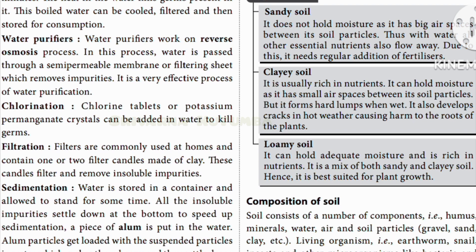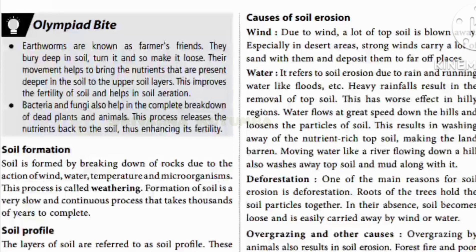The composition of soil consists of a number of components: humus, minerals, air, water, and soil particles like gravel, sand, and clay. Living organisms such as worms, snails, insects, and microorganisms like bacteria are also present in the soil. Earthworms are known as the farmer's friend. They are buried deep in the soil and turn it to make it loose, helping bring nutrients from deeper layers to the upper soil, improving fertility and soil aeration.